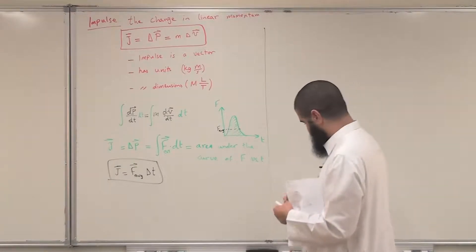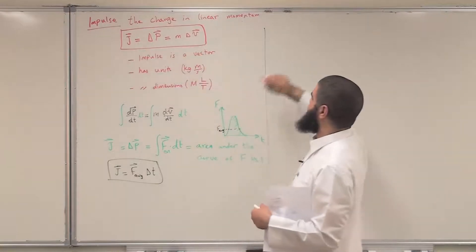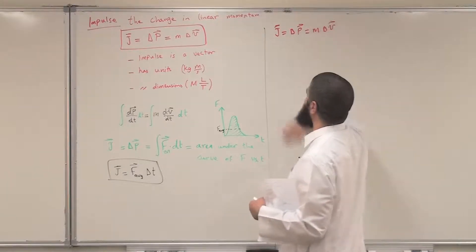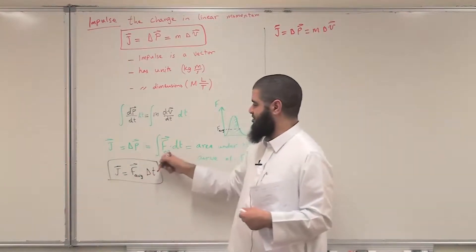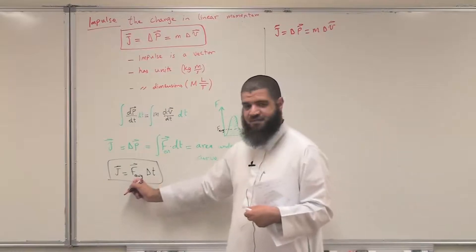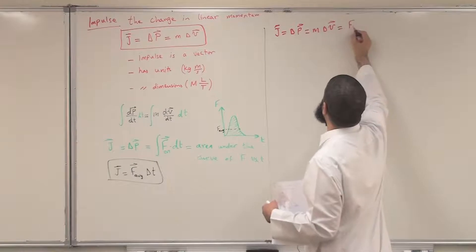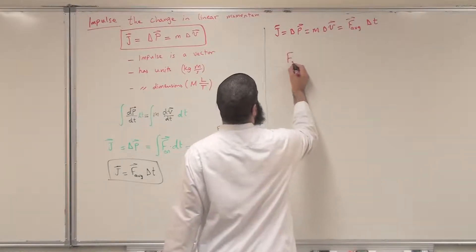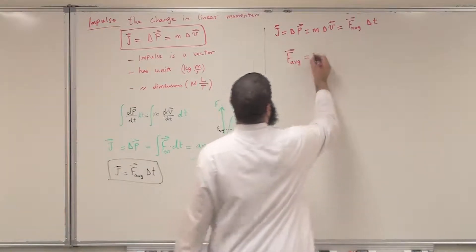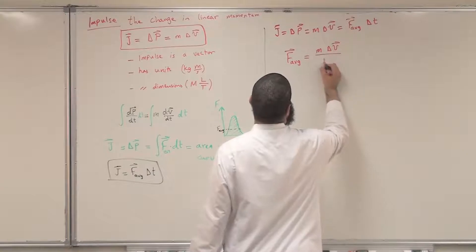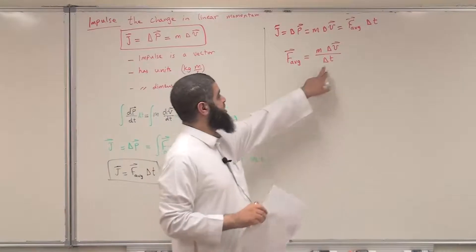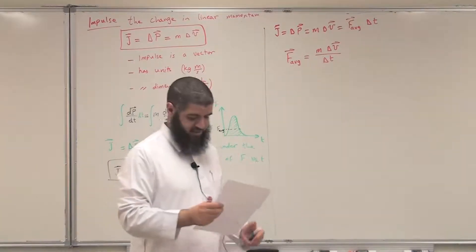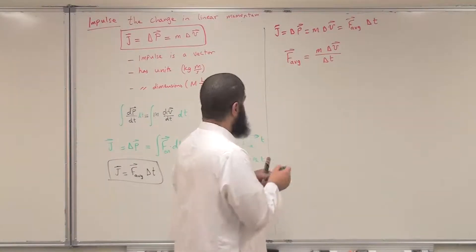So to summarize: J equals delta P equals M delta V. At the same time, J equals the integral of the external force by dt, and if the force is constant, J equals F average multiplied by delta T. From here we can get a very nice finding: the average force equals mass multiplied by the change in velocity divided by delta T, where delta T is the time needed to change the velocity from V initial to V final. This is a very important formula.